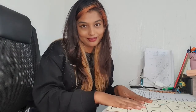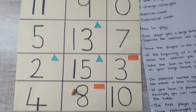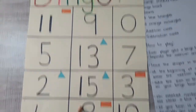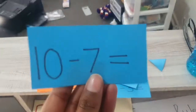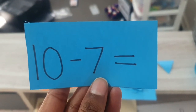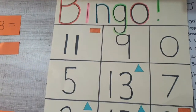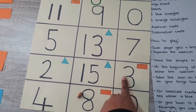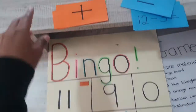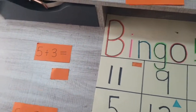Let's go ahead and finish up the game. Now it's player two's turn — let's pretend player two has their own bingo board with different numbers. Player two picks a card: 10 minus 7 equals three. They find number three on their board and it has a rectangle, so they put a bean on it and collect one rectangle.